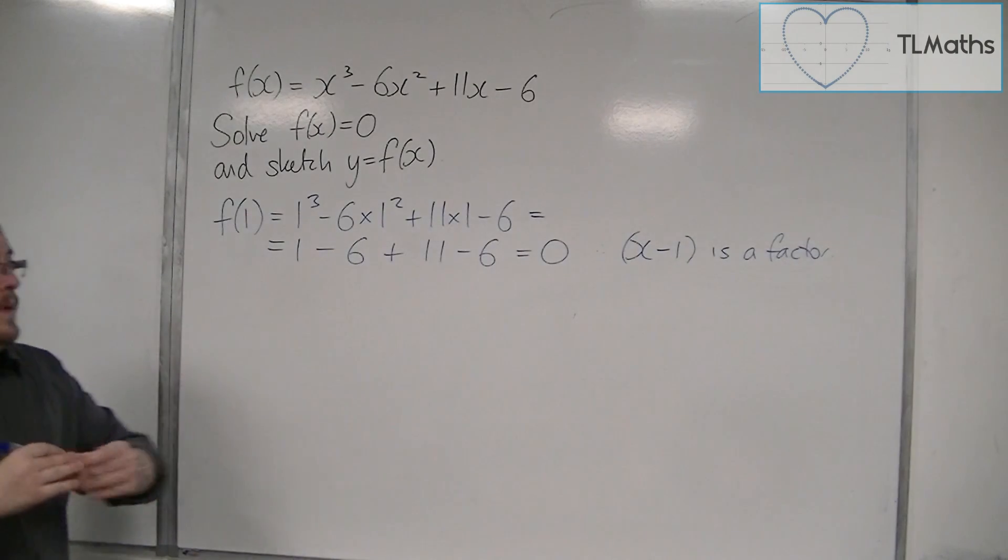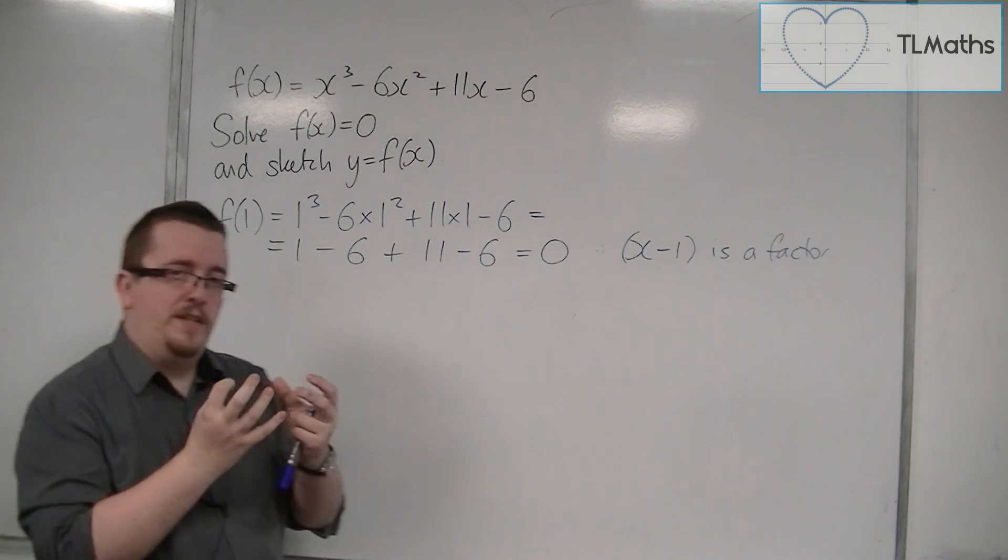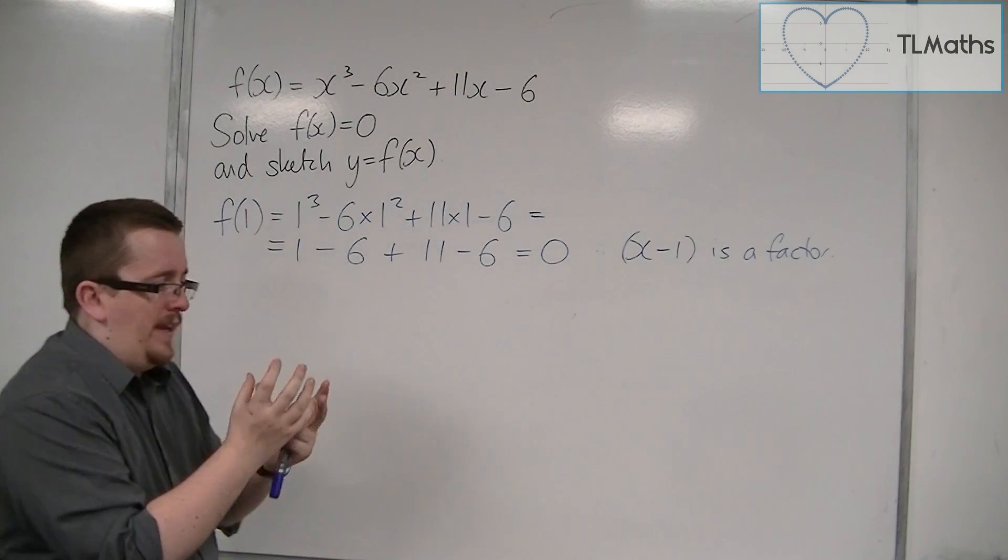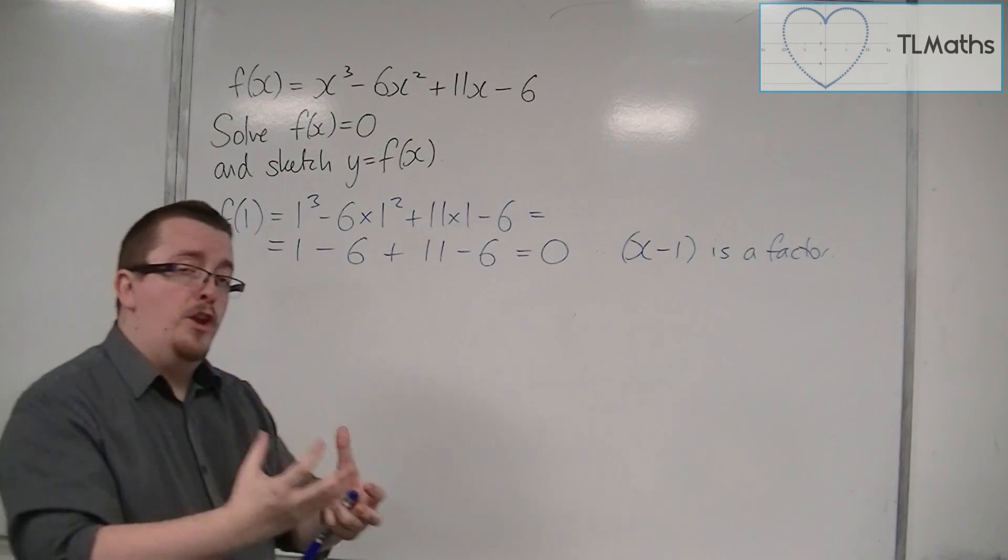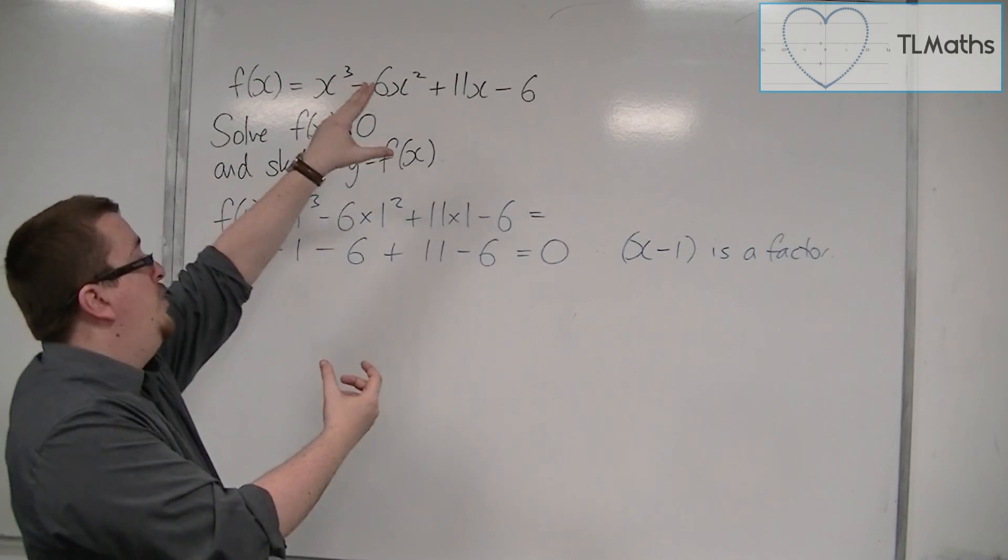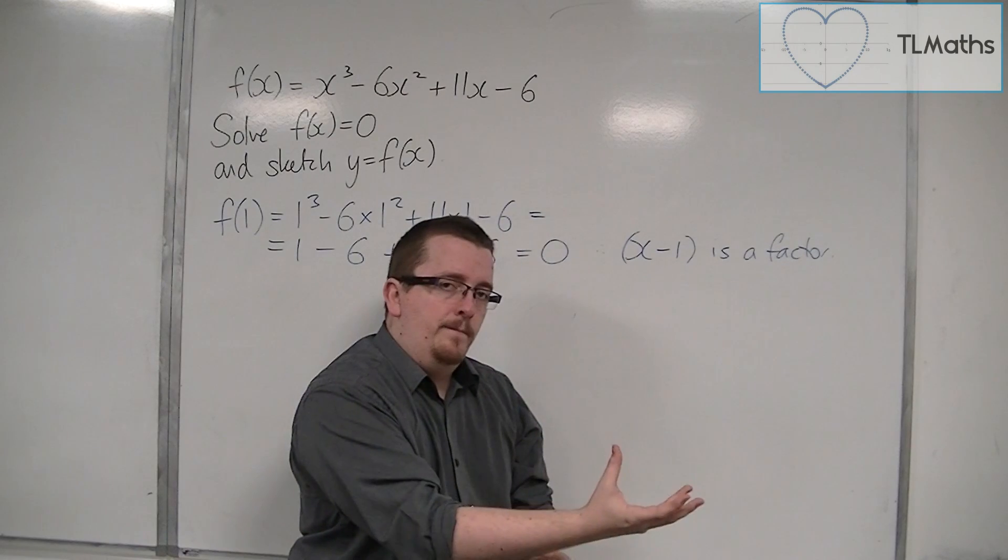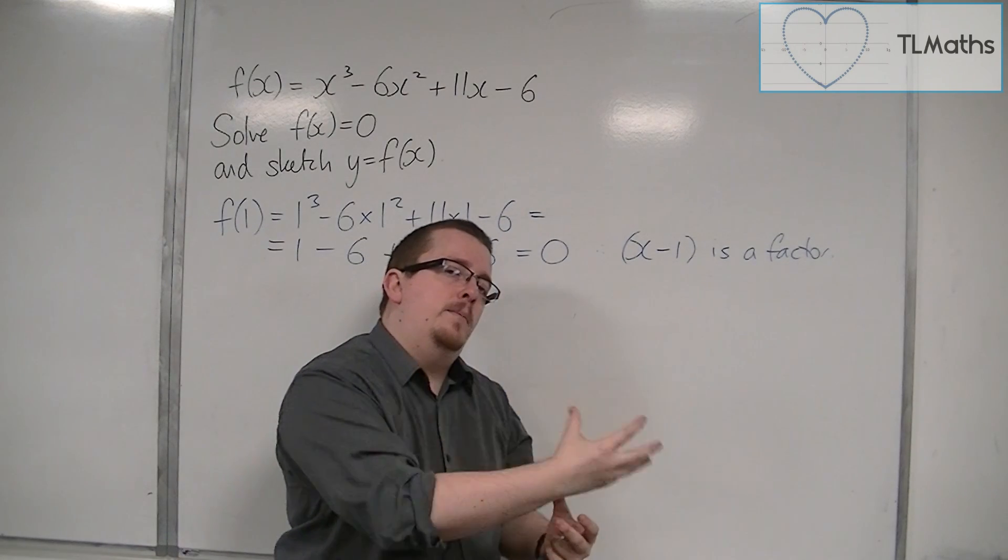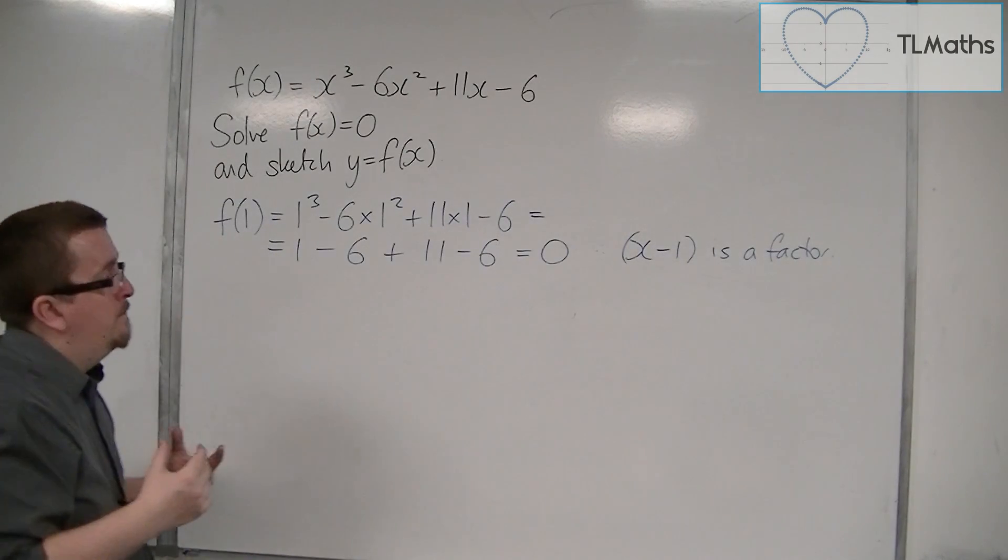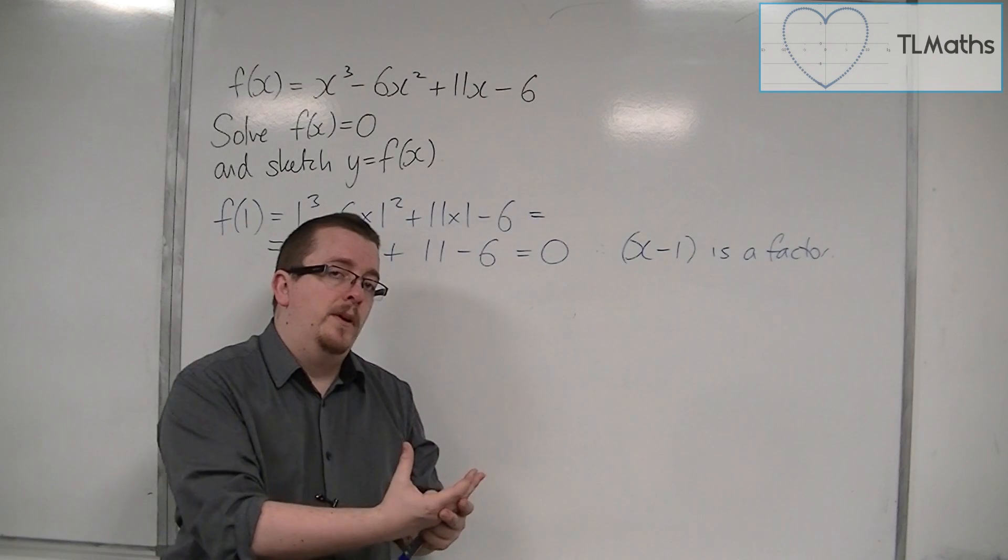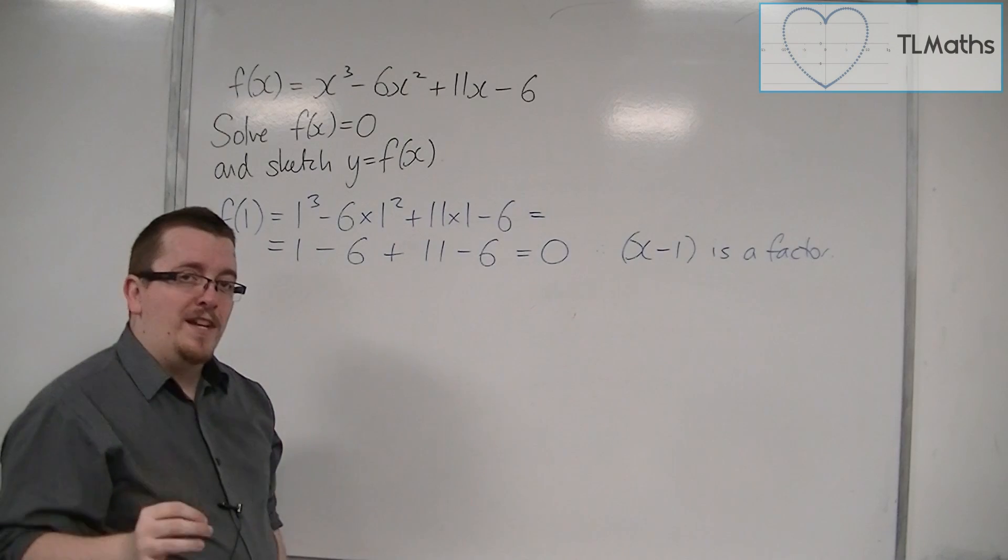So remember that concluding statement. Now from that point onwards, once you've found a factor, you can then use polynomial division. So you can divide the cubic by x minus 1. That's going to give you a quadratic, which you should then be able to factorize. There is potential that you can't factorize it, but in this case you will be able to. And from this video, I would probably suggest that you have a go at that.